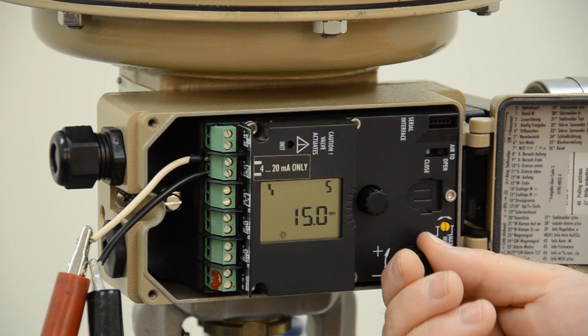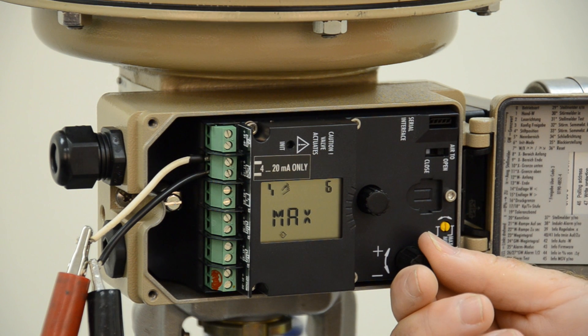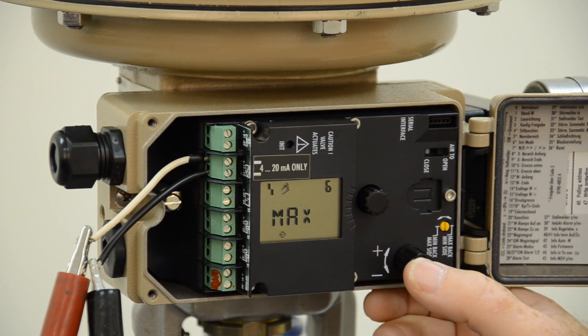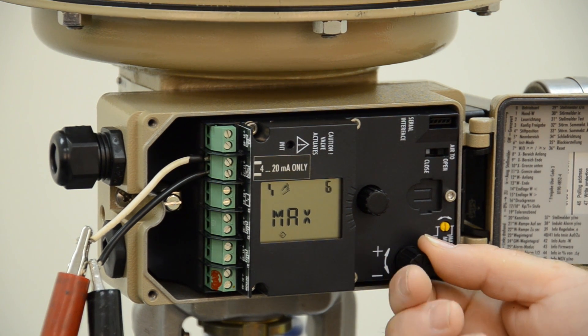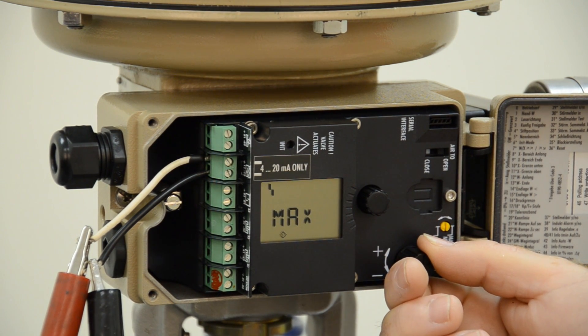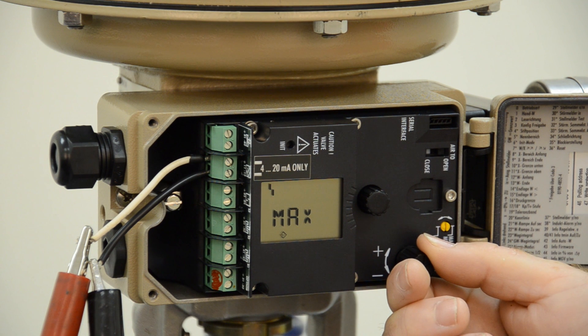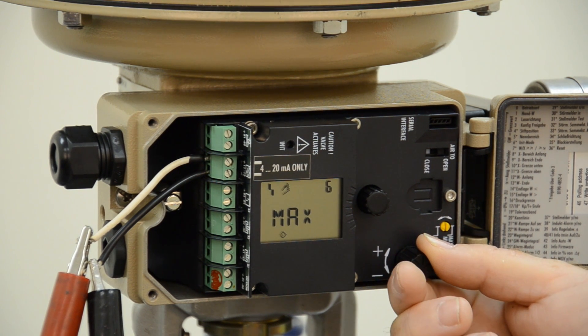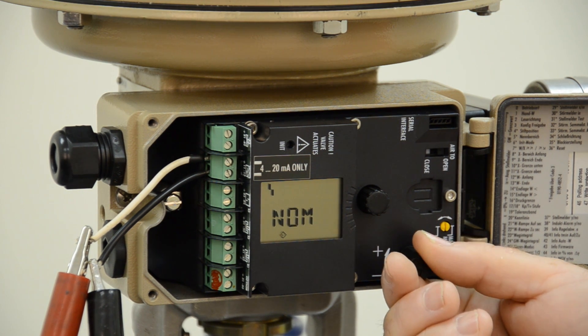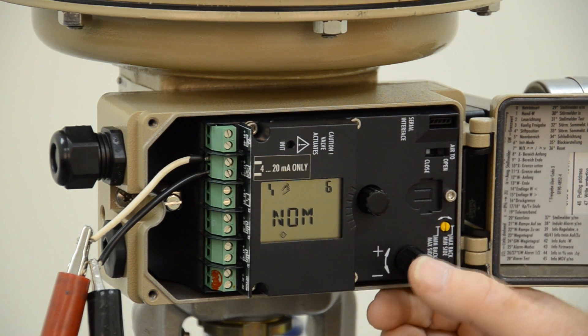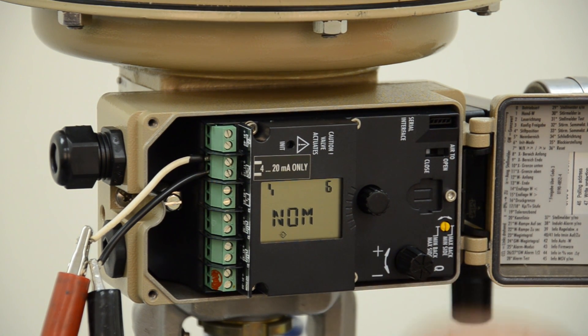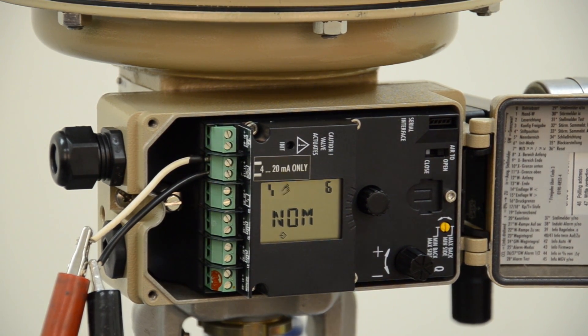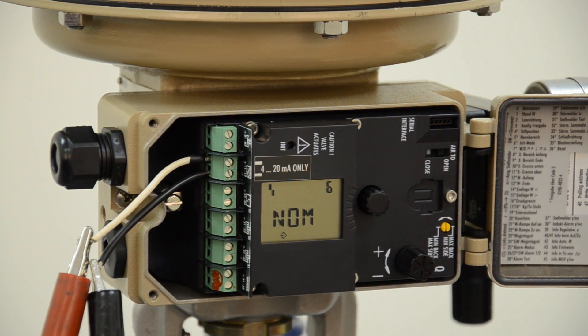Our next code is code 6. We press code 6. This is the travel distance that we want the actuator. And we've set it up for 15 millimeters, which is going to be in this case, we set under nominal travel. We press again to acknowledge. And at this point, we've done all the configuration that we need.